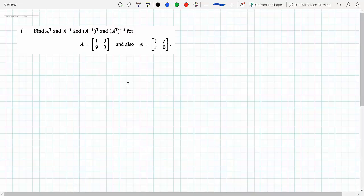Find A transpose, A inverse, (A inverse) transpose, and (A transpose) inverse, where A is a 2x2 matrix with entries 1, 0, 9, 3.